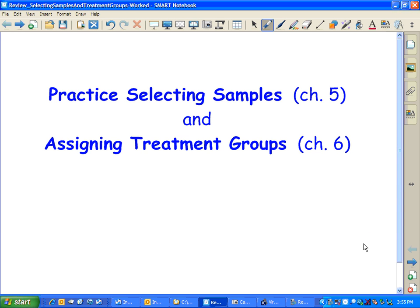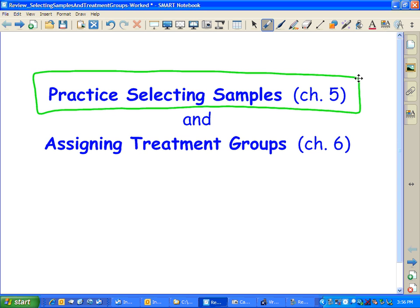We are working here on selecting random samples and assigning treatment groups using random digits tables or using a random number generator on a calculator to do it. This particular example here, we're going to be selecting a sample. That's the chapter five piece.